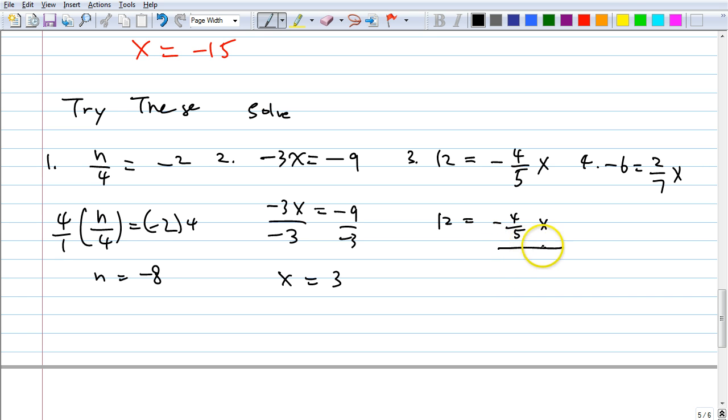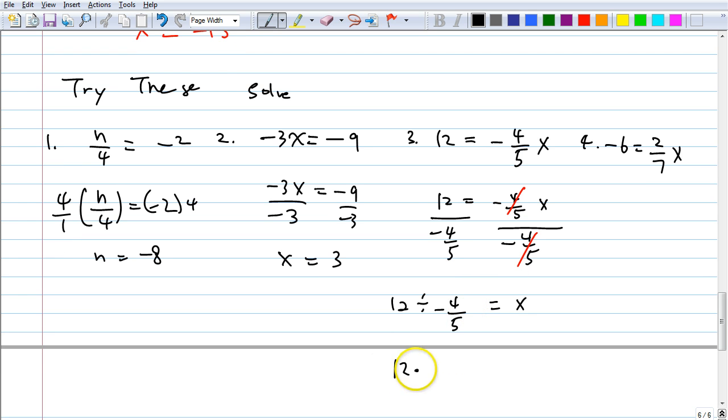Divide. Divide it by? Negative 4 fifths. Is that right? And of course, when you divide it like this, the same number cancels out to be 1, because negative 4 fifths goes into negative 4 fifths once, right? So what do you end up getting on the right side? You just get x. This means 12 divided by negative 4 fifths. And that becomes 12 times negative 5 over 4, equals x.